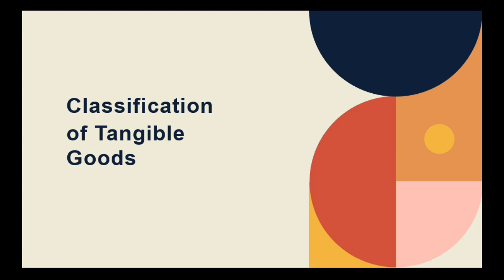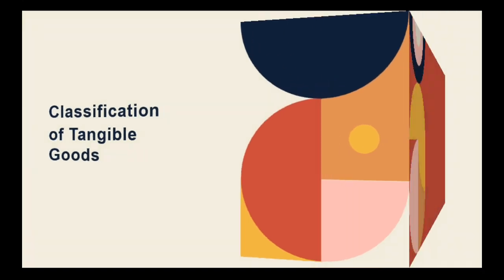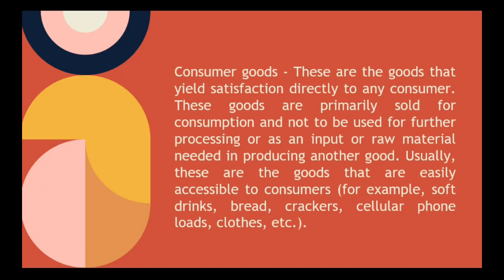Let's move on to the classification of tangible goods. First, we have consumer goods — goods that yield satisfaction directly to any consumer. These goods are primarily sold for consumption and not to be used for further processing or as raw material needed in producing another good. Usually, these are goods that are easily accessible to consumers. Examples include soft drinks, bread, crackers, cellular phones, loads, clothes, and so on.